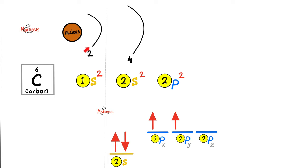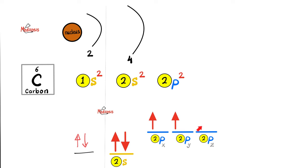Carbon has the first two electrons in the first electron shell, and then the last four electrons in the valence electron shell. The two electrons here are in the 1s² subshell. As for these four electrons, they are 2s² and 2p². This will be a huge topic coming later: sp³ hybridization versus sp² hybridization versus sp hybridization.